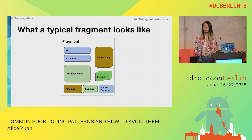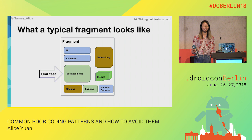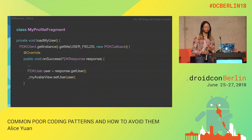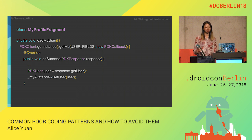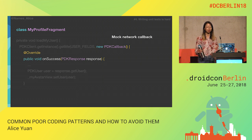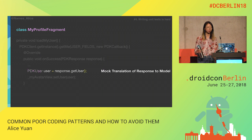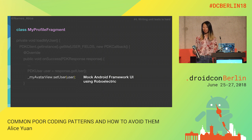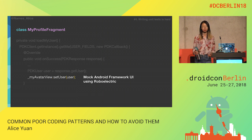All we really want to test is the business logic. So why is it that we have all of this information just in our fragments? Here is my profile fragment, and here is a snippet of code in that profile. In order to write unit tests, we have to mock the network callback, mock the translation of the response to the model, and on top of all of that, we need to use Roboelectric in order to mock the Android framework UI. This is a lot of work just to mock a single method call.